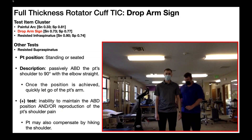We're now going to look at the drop arm sign. This test is unique to the full thickness rotator cuff tear test item cluster, while the painful arc and resisted infraspinatus tests are also part of the subacromial impingement syndrome cluster. Depending on the source, you might see a couple of different ways this test is performed; here is the most common way it's done in a clinical setting.